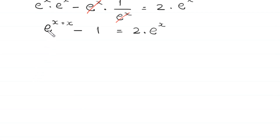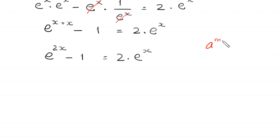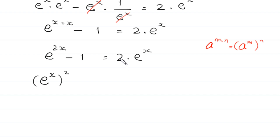Next, e to the power x plus x becomes e to the power 2x, minus 1 is equal to 2 times e to the power x. Now, by using the power rule a to the power m times n equals a to the power m, whole to the power n, e to the power 2x can be written as e to the power x, whole squared. Moving 2 times e to the power x to the left side, it becomes negative 2 times e to the power x, minus 1 is equal to 0.